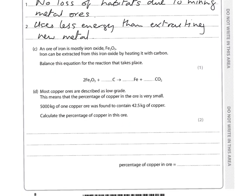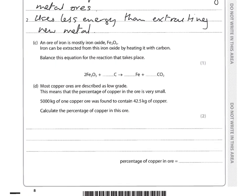An ore of iron is mostly iron oxide, Fe₂O₃. Iron can be extracted from iron oxide by heating with carbon. Balance the equation for this reaction. Given a 2 in front of Fe₂O₃, that means four iron atoms and six oxygens. So put a 4 in front of Fe; with six oxygens you need three CO₂ molecules, which gives three carbons. The balanced equation needs coefficients 2, 3, 4, 3.